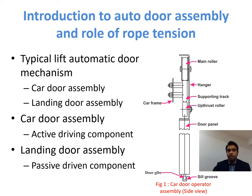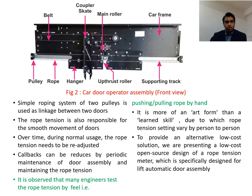The landing door assembly is a passive driven component, and with the help of coupler shields, it is coupled with the car door assembly. The figure shows the different components of the auto door assembly, such as car frame, hanger, main roller, supporting track, up-thrust roller, door panel, etc. In the case of a center opening mechanism, the door panels move in opposite directions during operation. The linkage between the door panels is established through a simple roping system of two pulleys.